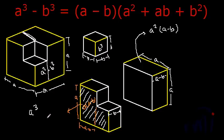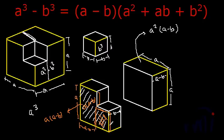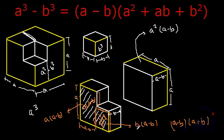The area of this rectangle will be A multiplied by A minus B. And the area of the second rectangle: its width is A minus B and its height is A minus B, since this much is B, the remaining height will be A minus B. So the area of this rectangle will be B multiplied by A minus B. Together, the area of this L-shaped face will be the sum of these two: A minus B multiplied by A plus B. And the volume of this L-shaped solid will be this area multiplied by the thickness B.